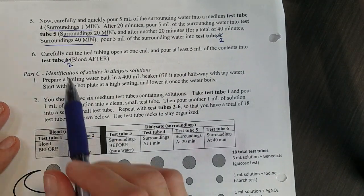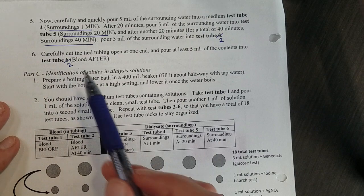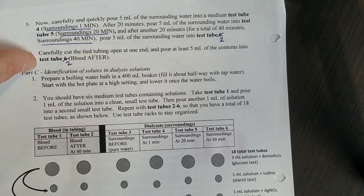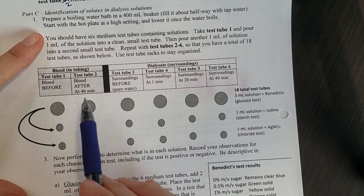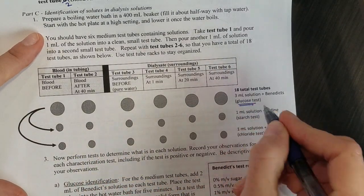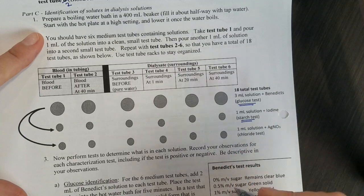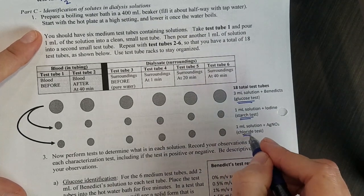In part C we're going to identify what was in the dialysis. You're going to see as the lab is worked that there are a lot of test tubes. We'll have big ones for the glucose test and then a small set with starch and a small set with chloride.